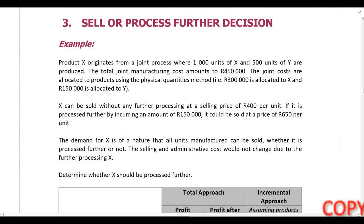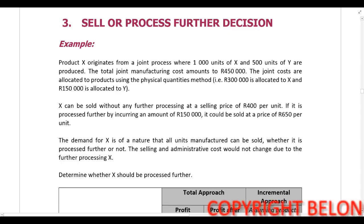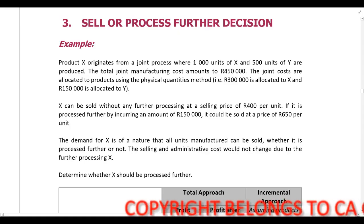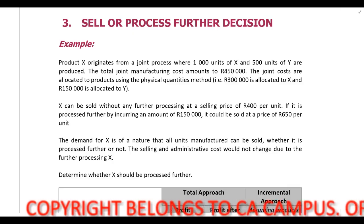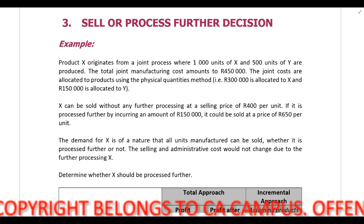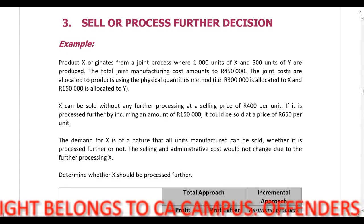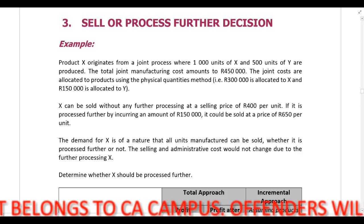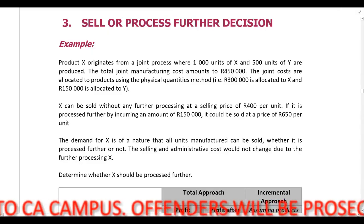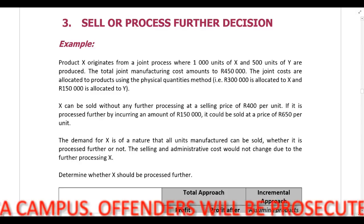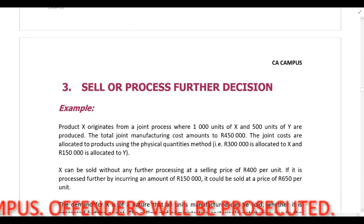The next type of decision we need to look at is the sell-or-process-further decision. We already covered joint and by-products. In this example, just as a little revision: Product X originates from a joint process where 1,000 units of X and 500 units of Y are produced. The joint manufacturing cost amounts to 450,000 rand, and joint costs are allocated using the physical quantities method, so 300,000 rand is allocated to X and 150,000 rand to Y.